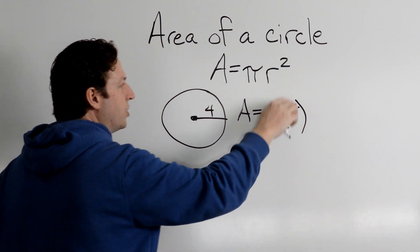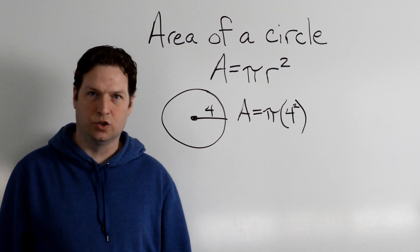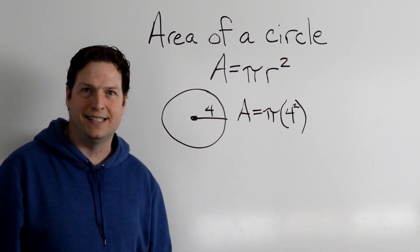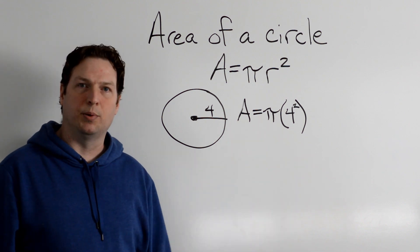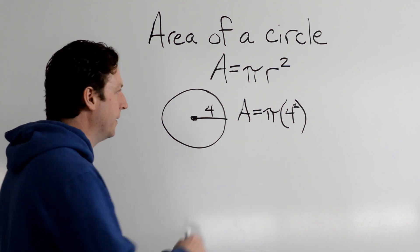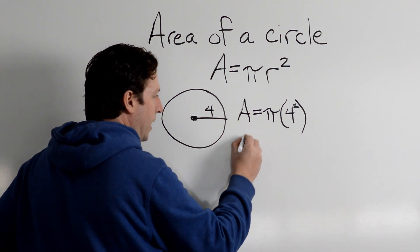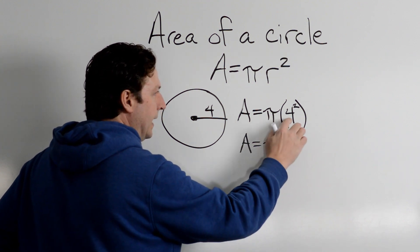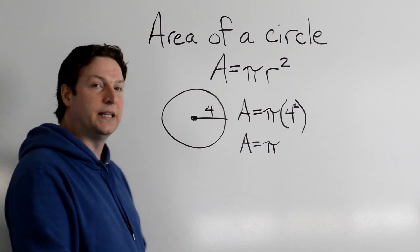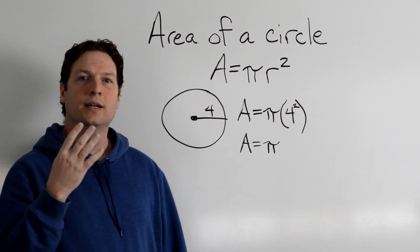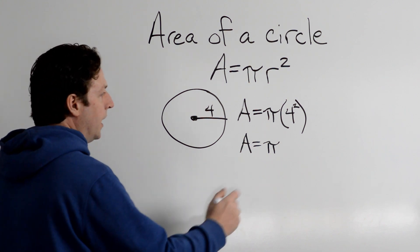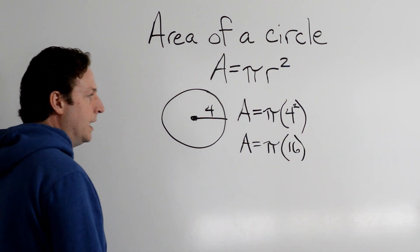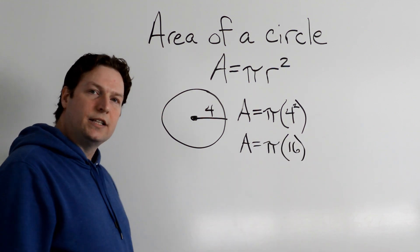4, and we need to square it. So I'm going to keep the little 2, which means to multiply this 4 times itself before we multiply by pi. Let's keep going. So the area equals pi, and now 4 squared, that just means to multiply 4 times 4, and I get 16.